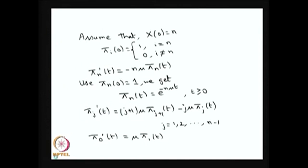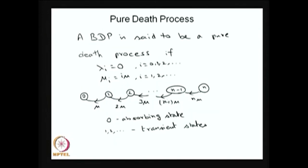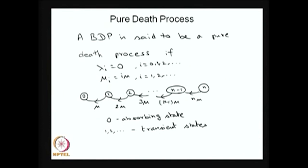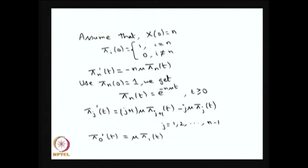For the second equation, the equation for state n−1 is: pi_{n-1}-dash(t) equals n*mu * pi_n(t) minus (n−1)*mu * pi_{n-1}(t). There are two terms on the right-hand side: coming from state n, and not moving from state n−1. Similarly, for j = 1 to n−1 there are two terms. For the last state, state 0, the system comes from state 1 only; since state 0 is absorbing there is no second term, giving pi_0-dash(t) = mu * pi_1(t).